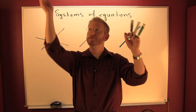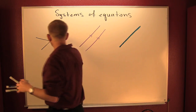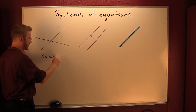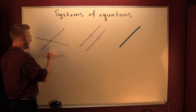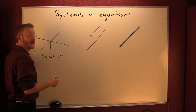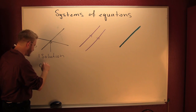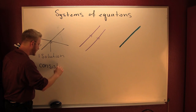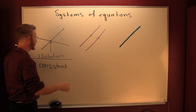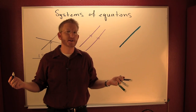If lines cross, then there is a solution. Here we have one solution. That one solution is a point. If a system has a solution — at least one — it's said to be consistent.